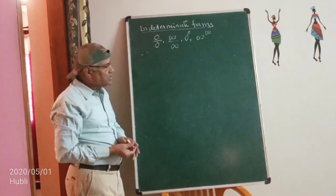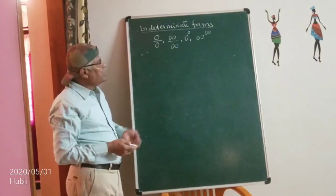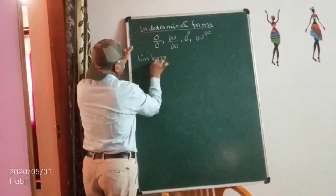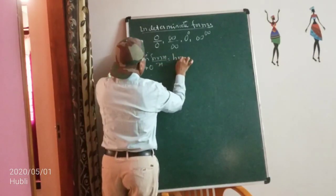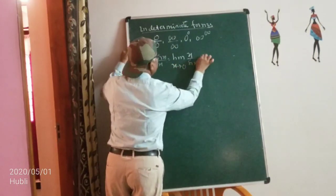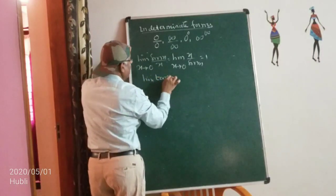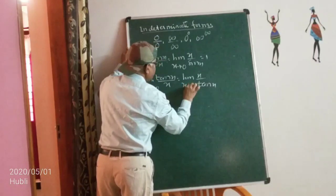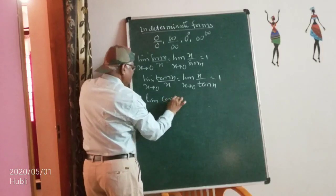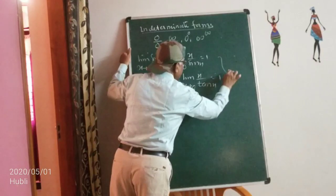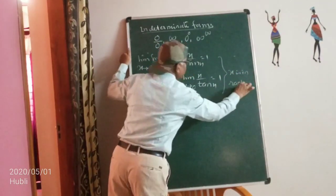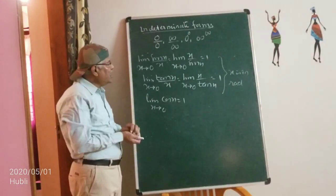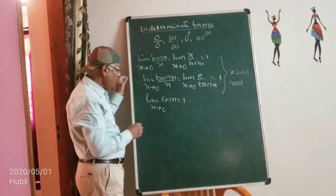Students, in the first year you have studied the standard limits — all those formulas I'll give in the notes. The first standard limit is: limit of sin(x)/x as x→0 = 1, which also equals limit of x/sin(x) as x→0 = 1. Limit of tan(x)/x as x→0 = 1, and limit of x/tan(x) as x→0 = 1. Limit of cos(x) as x→0 = 1. An important point: x must be in radians. If in degrees, convert to radians first.